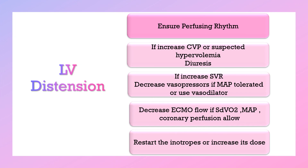Detection of left ventricular distension in peripheral VA ECMO can be done by decreased pulse pressure less than 10 mmHg, increased CVP, presence of pulmonary edema, and increased end-diastolic diameters. This can be treated by non-invasive measures like ensuring perfusing rhythm, using diuresis if CVP is increased or hypervolemia is suspected, decreasing vasopressors or using vasodilators if systemic vascular resistance is elevated and MAP is tolerated, decreasing ECMO flow if MAP, urine output, and central venous oxygen saturation are adequate, and restarting or increasing inotropes.